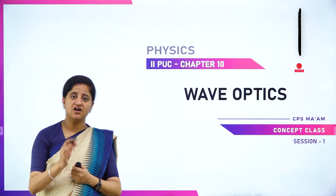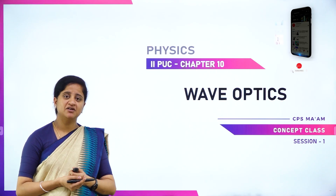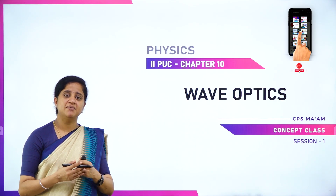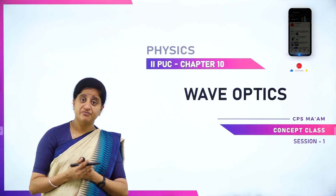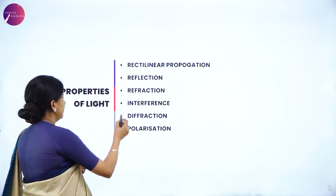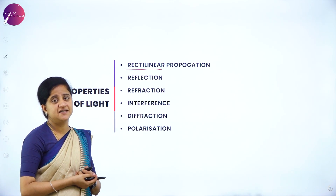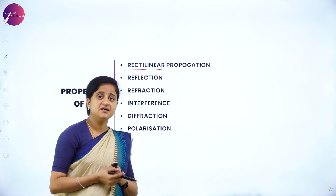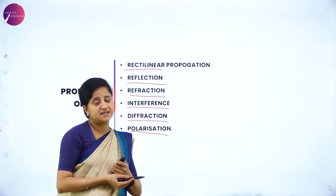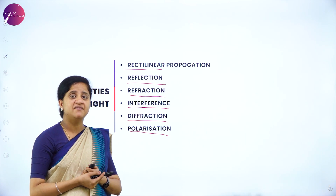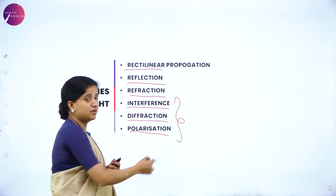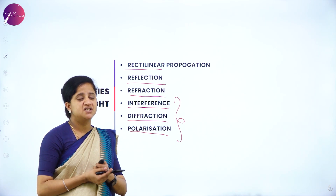Previously we have studied about the concept of ray optics, where we studied about the rectilinear propagation of light and its properties. In this chapter, we shall study about how light exhibits its wave nature. We shall brush up a few important things under the introduction. We have already studied properties of light: rectilinear propagation, reflection, refraction, interference, diffraction and polarization. In ray optics we studied only reflection and refraction, and here by taking concepts of interference, diffraction and polarization, we are going to understand the wave nature of light.